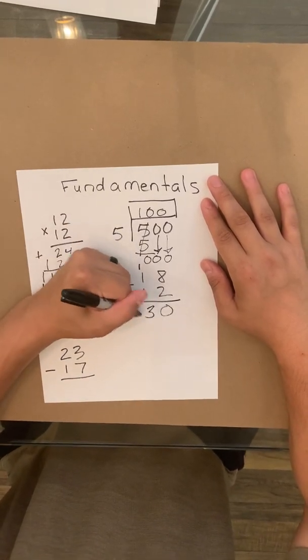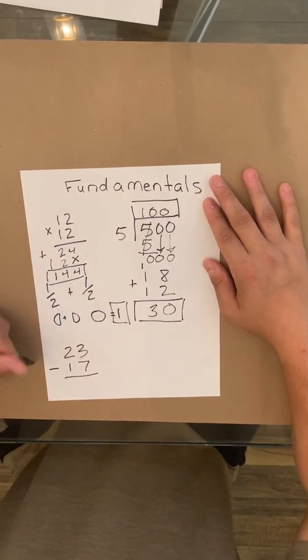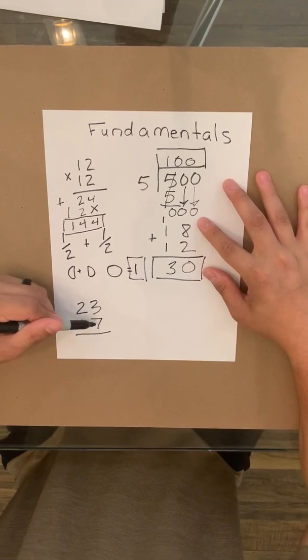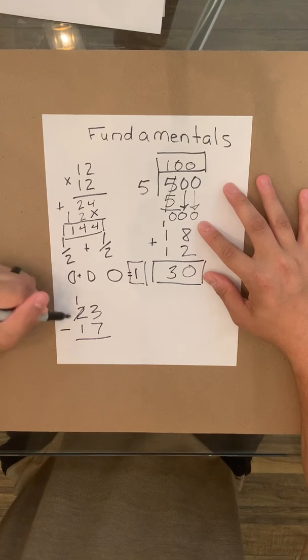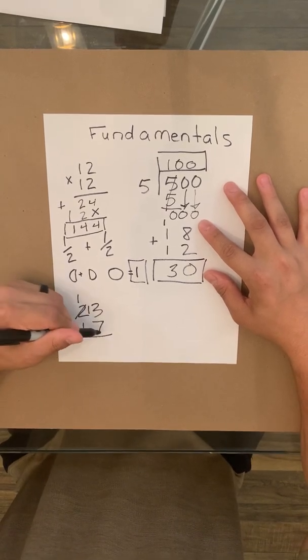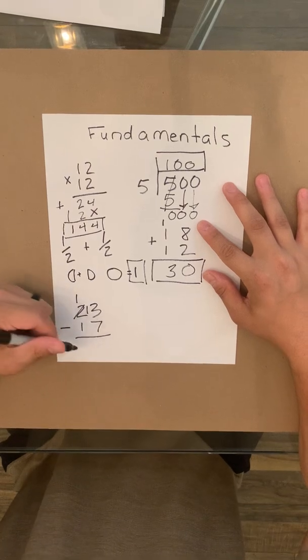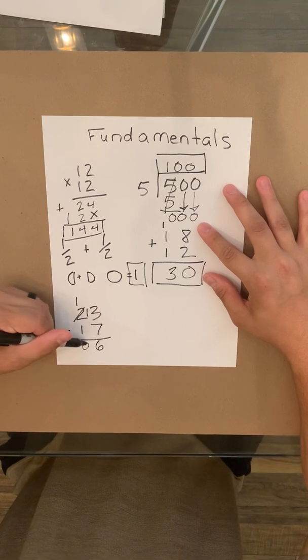And lastly we're going to do subtraction. In this, you can't subtract 7 from 3 because it's too large of a number. So you're going to take that out, make that a 1, bring 1 over here so it is now 13 minus 7. Once you do that, it's going to be 6, and then it's going to be 1 minus 1 equals 0.